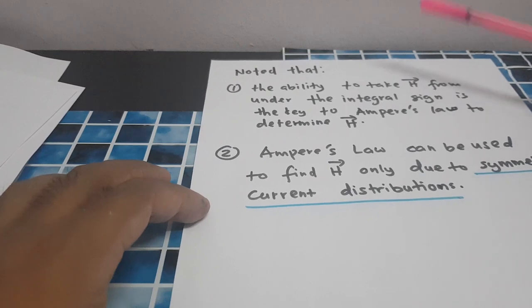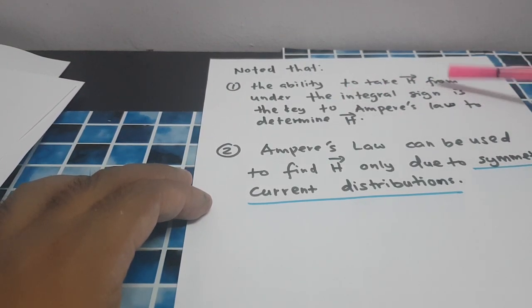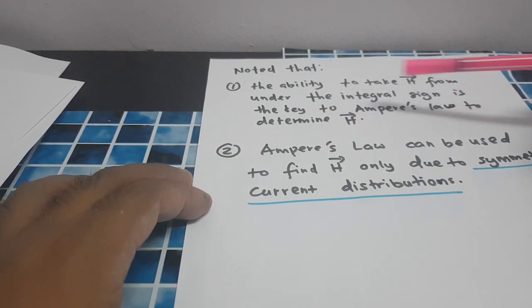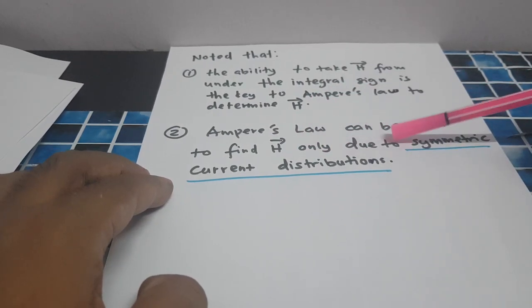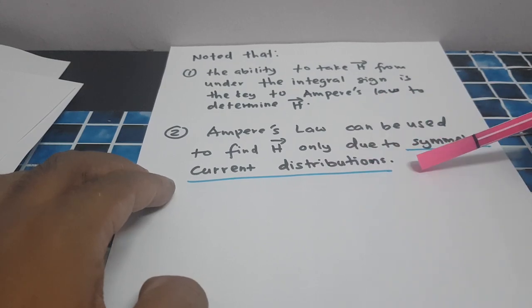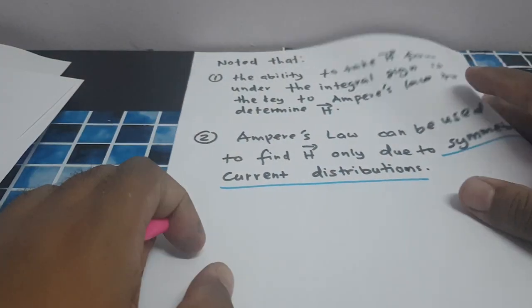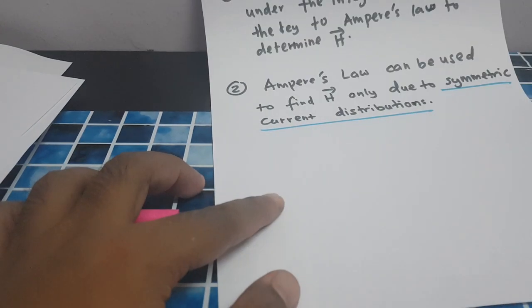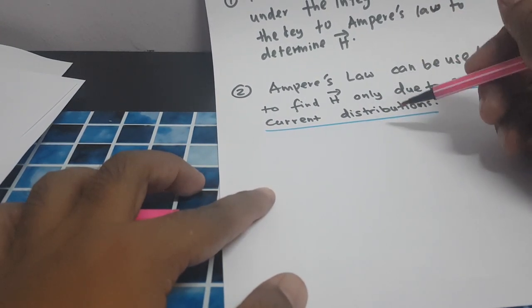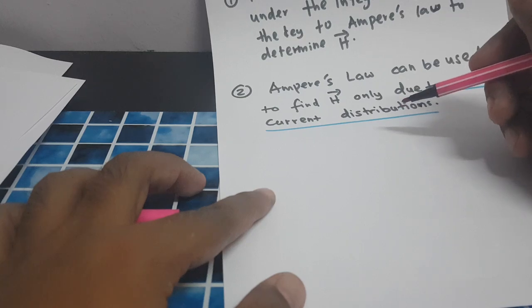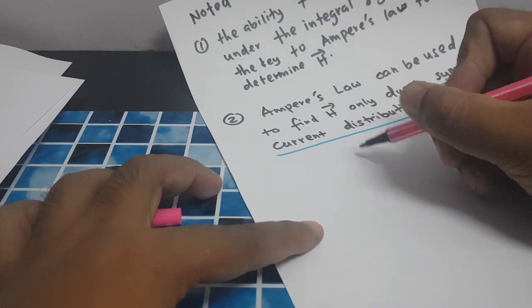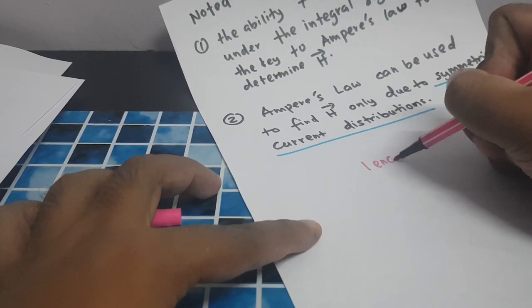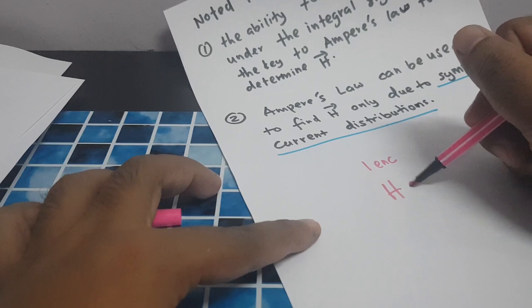We note that the ability to take H out from under the integral sign is the key to applying Ampere's Law to determine H. Ampere's Law can be used to find H only for symmetric current distributions. To find H for an infinitely long coaxial line, first find I enclosed for each region, then find the H field.